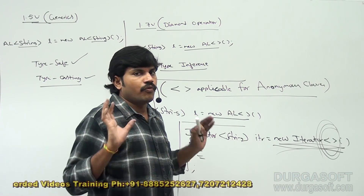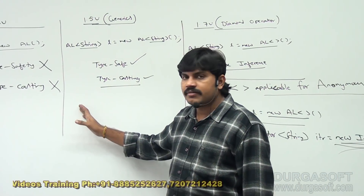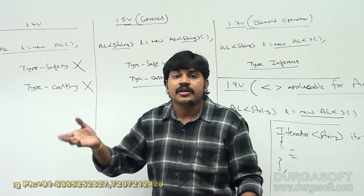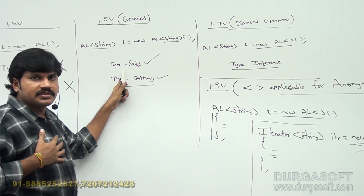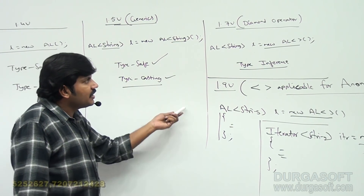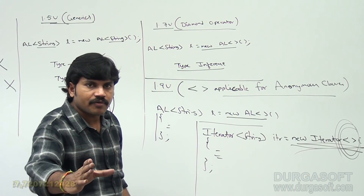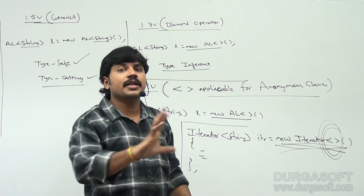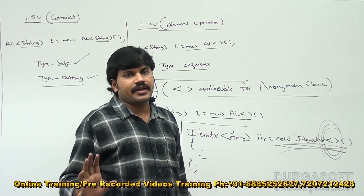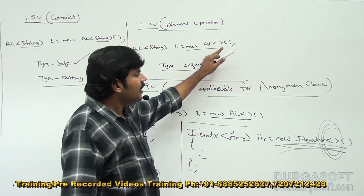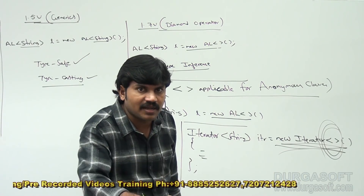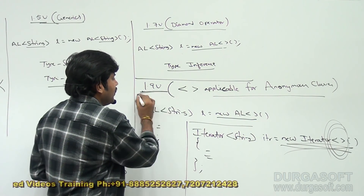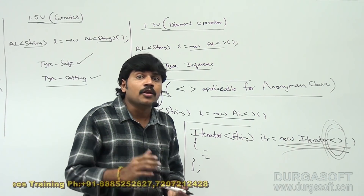To summarize: before Java 1.4, no generics, no type safety, type casting headache. In Java 1.5, generics came — type safety is there, type casting problems resolved. In Java 1.7, the diamond operator came — we are not required to repeat the type parameter a second time; code length is reduced and readability is improved. The diamond operator was applicable for normal classes but not anonymous inner classes until Java 1.8.